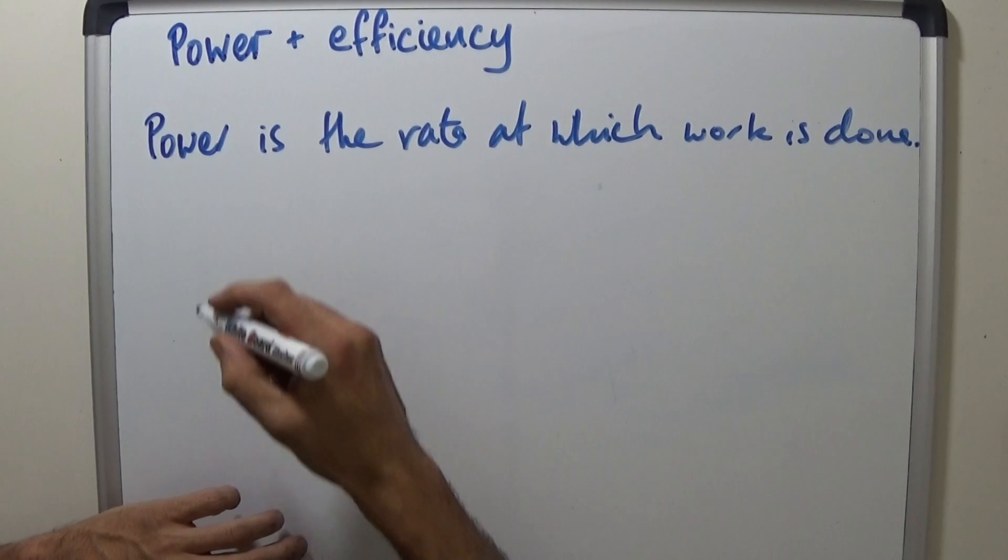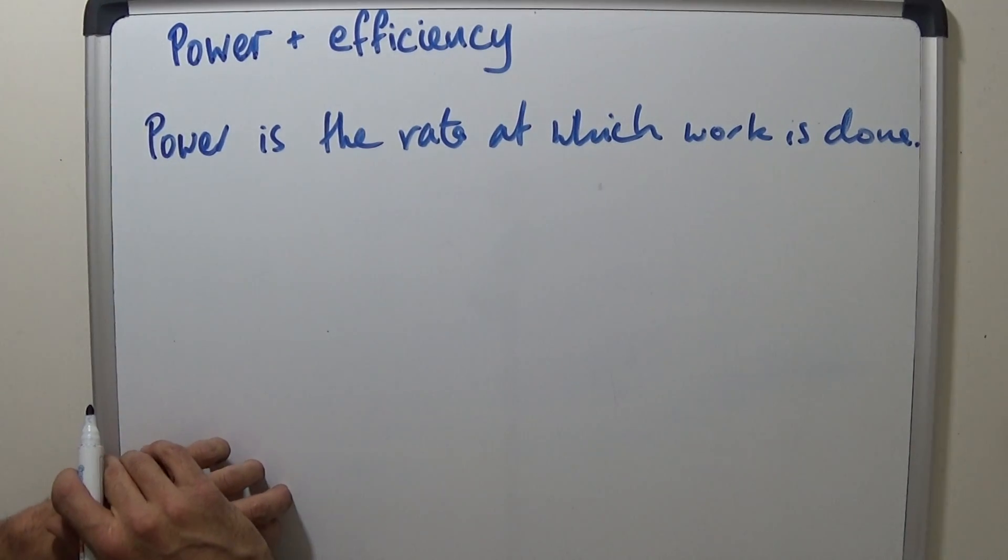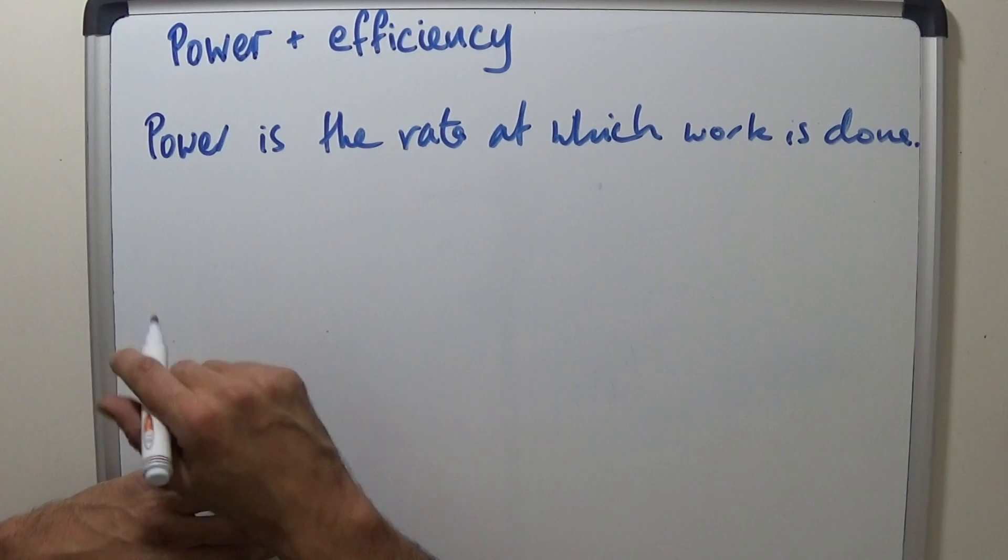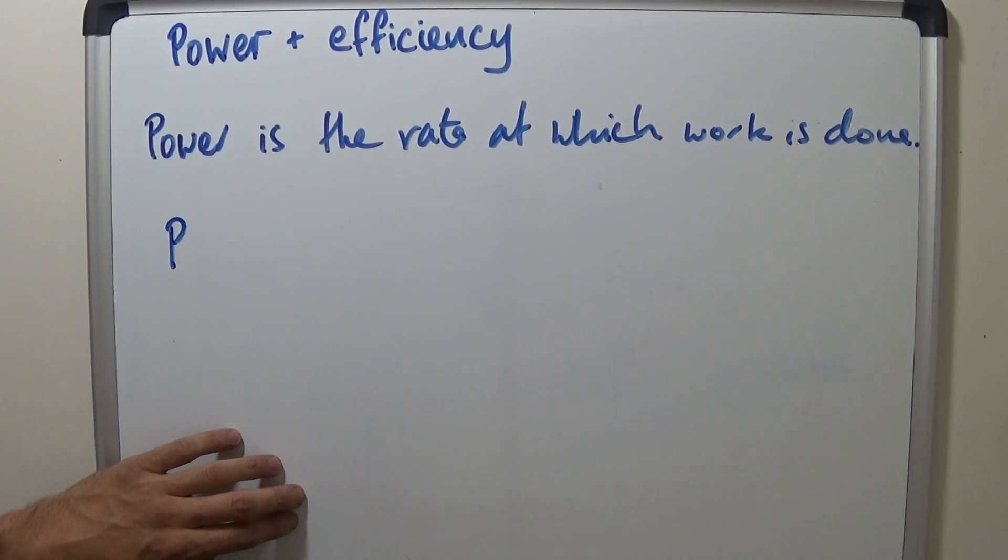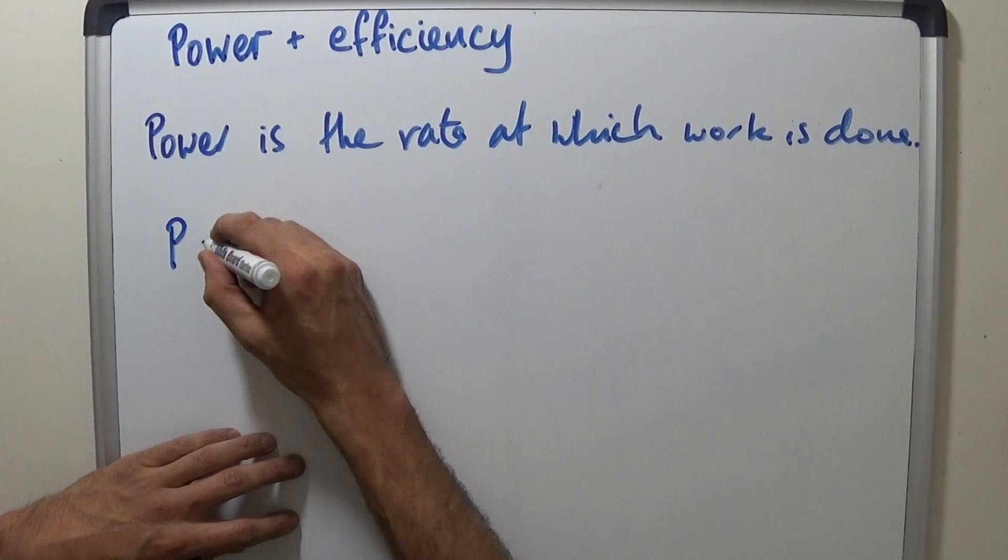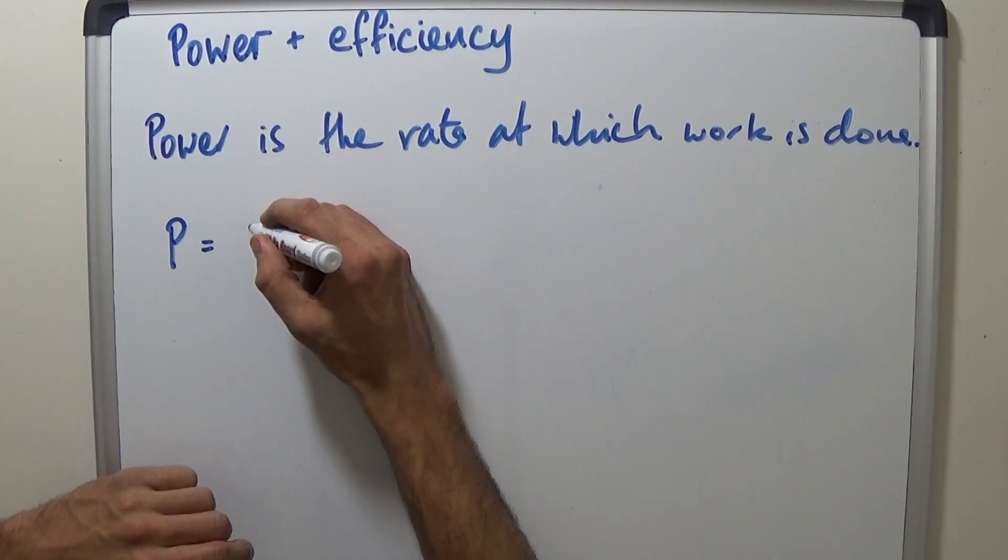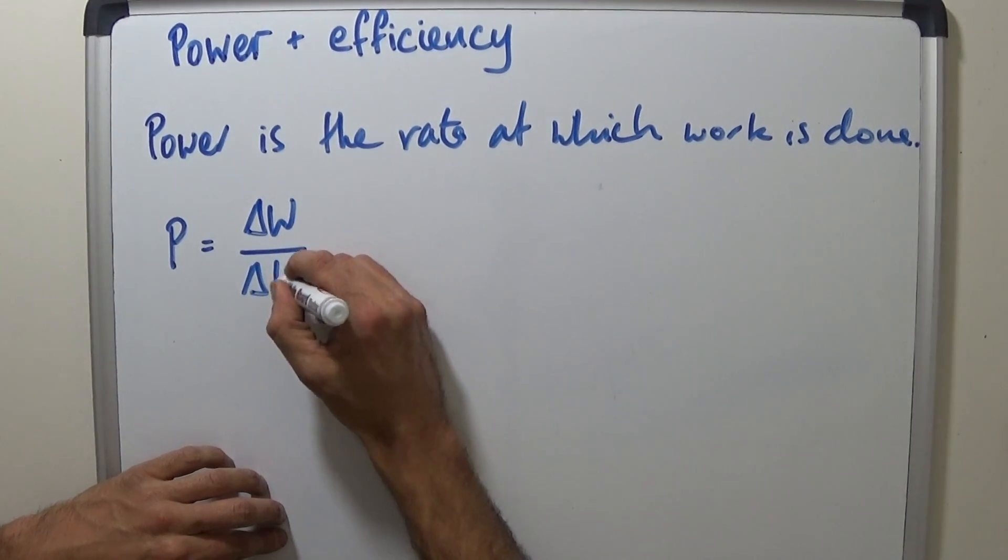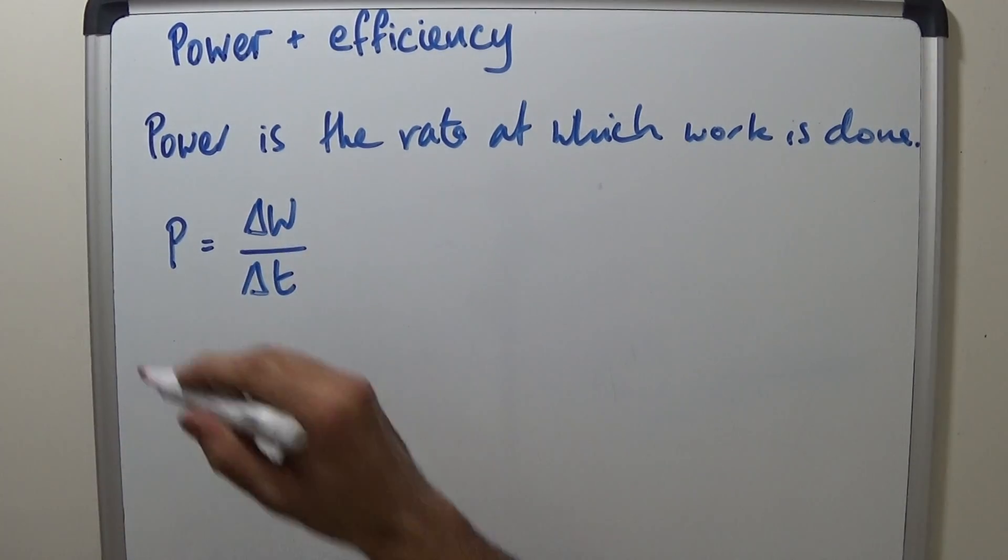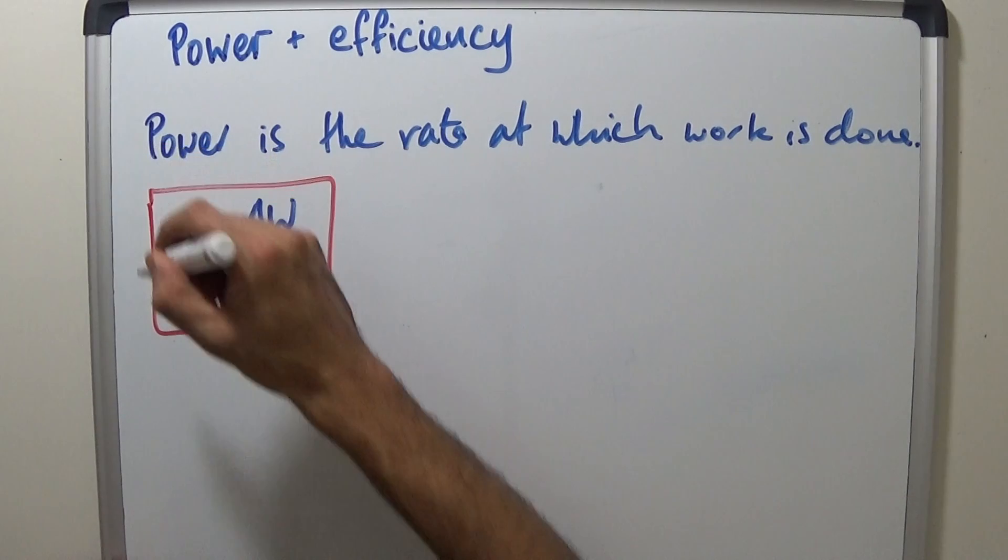If speed is distance divided by time, then power is energy or work done divided by time. So we can say P is work, change of work, over the change of time. And that's basically what we want to know about.